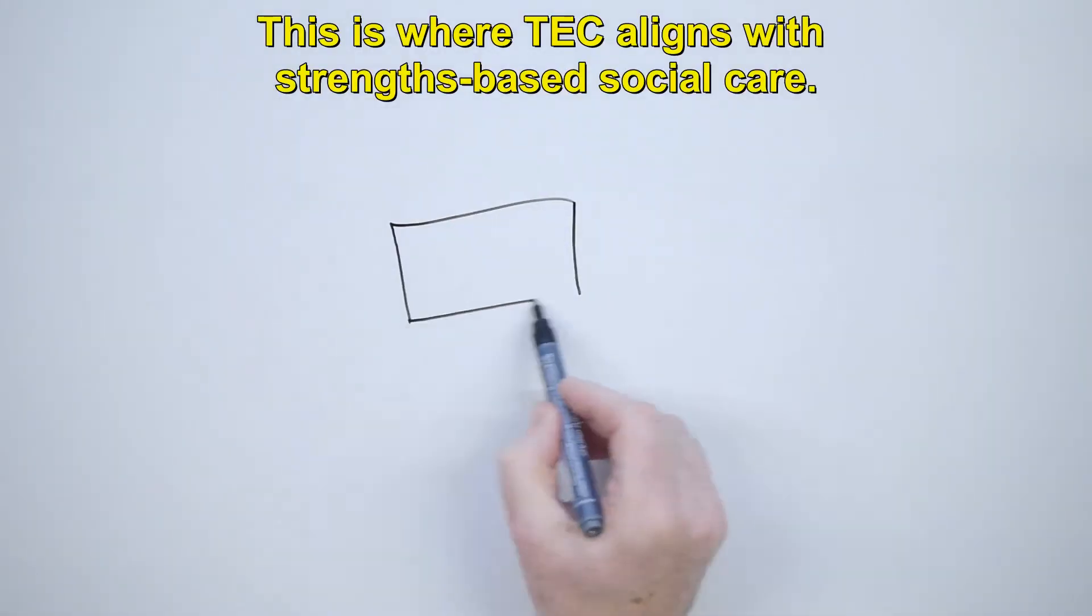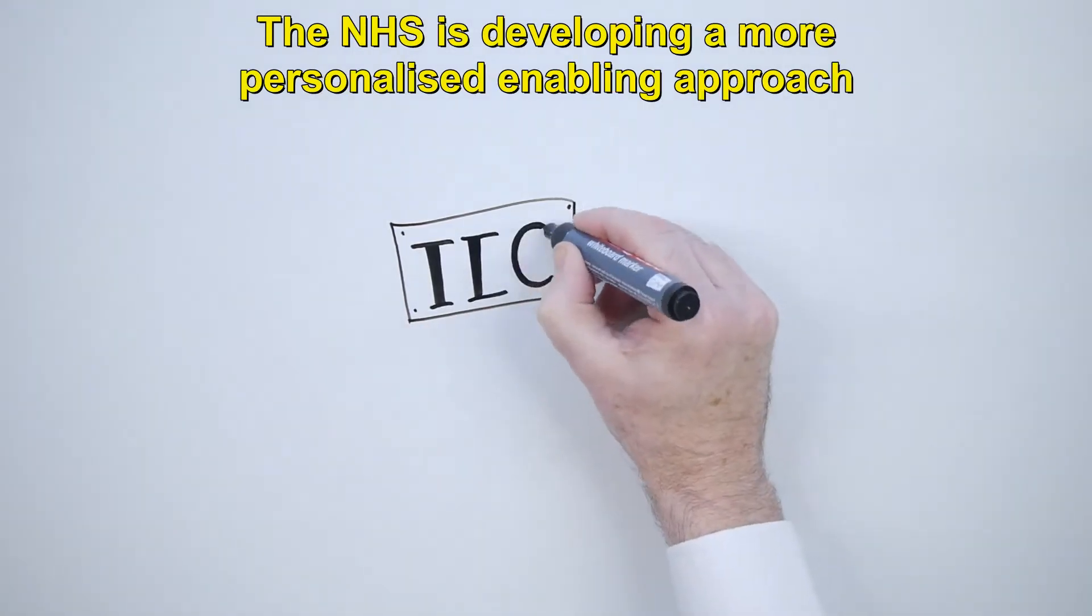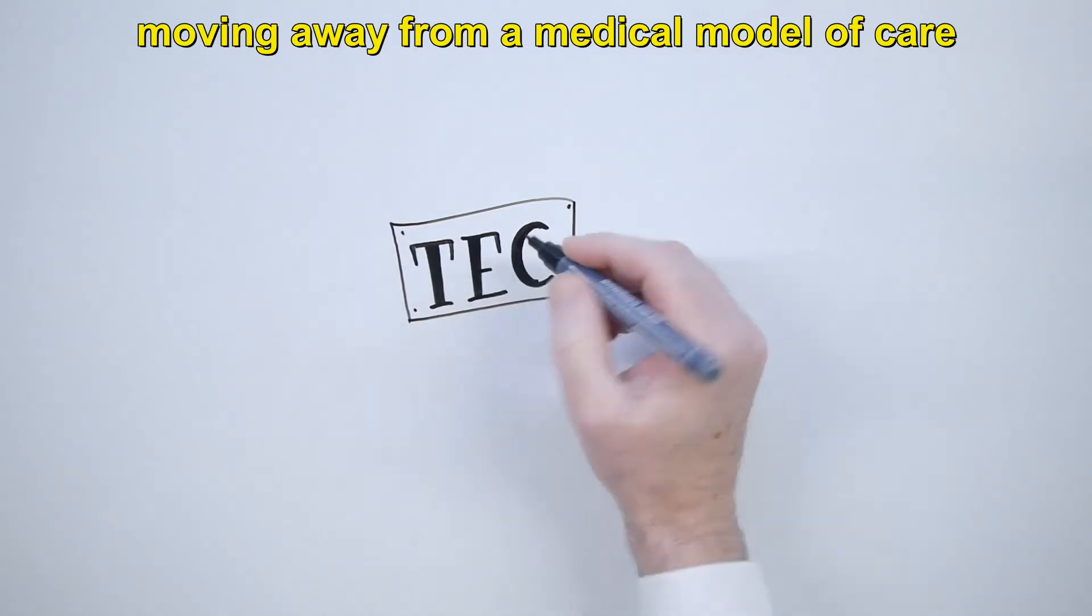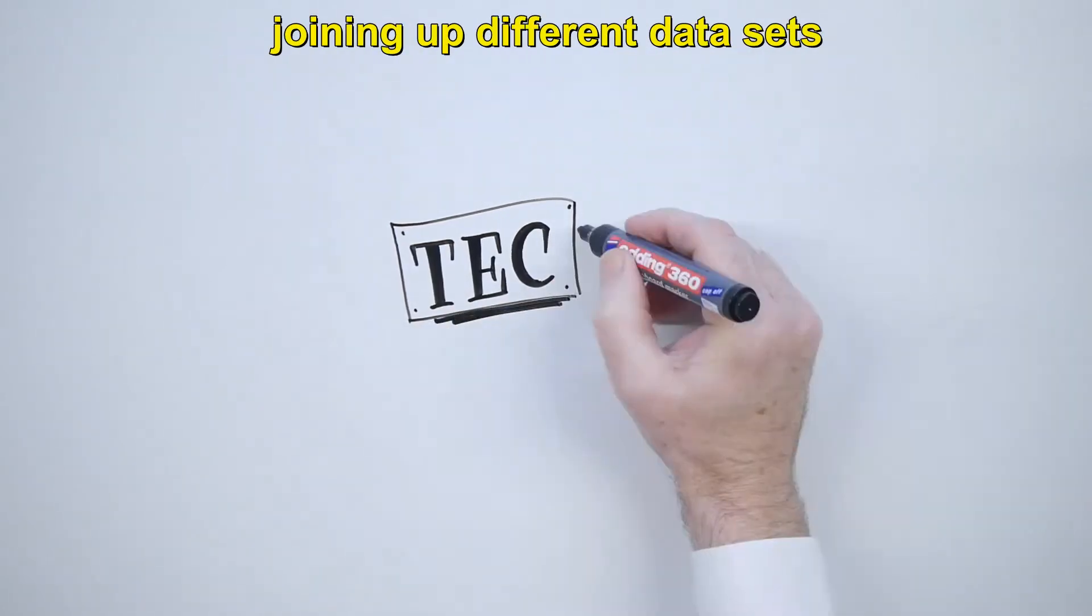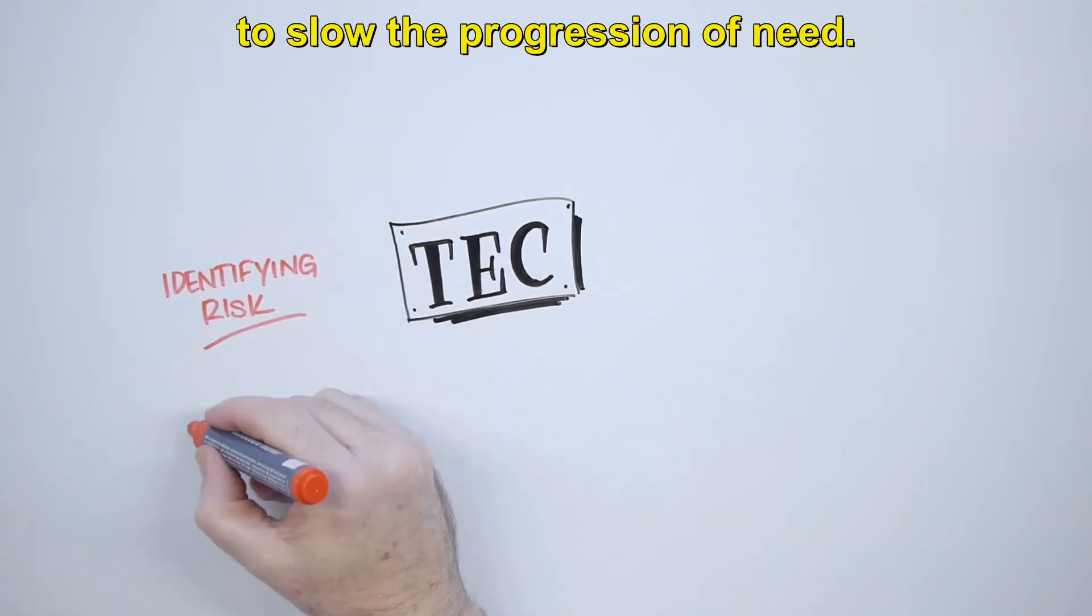This is where tech aligns with strengths-based social care. The NHS is developing a more personalized enabling approach, moving away from a medical model of care, joining up different data sets and tackling social determinants of health to slow the progression of need.